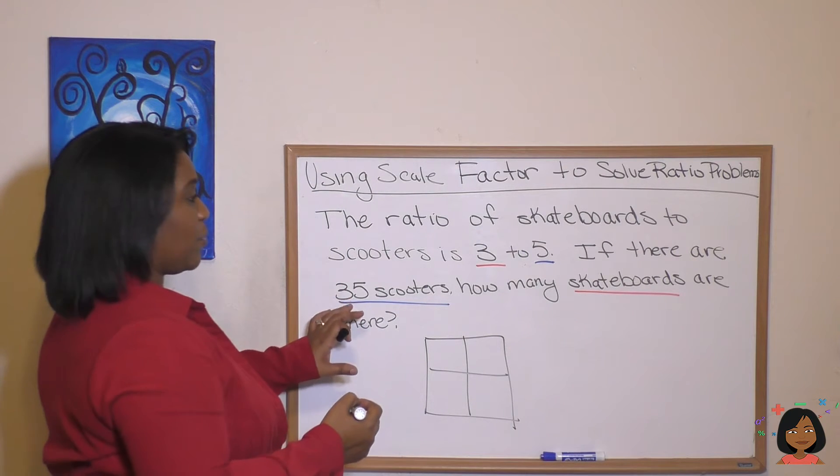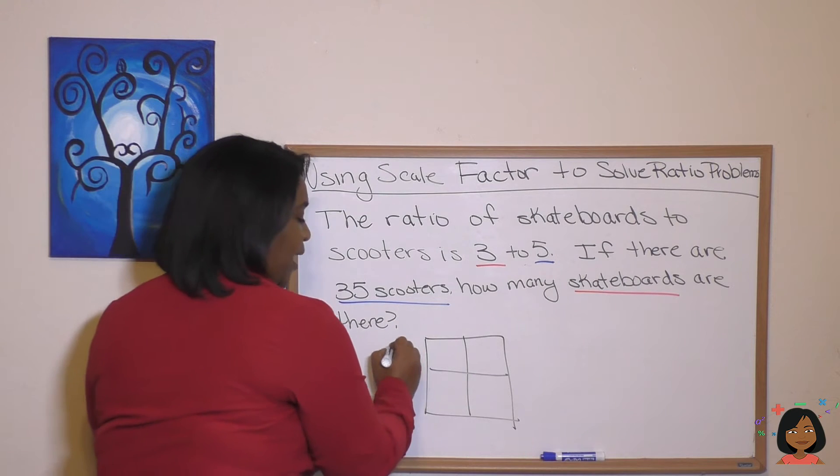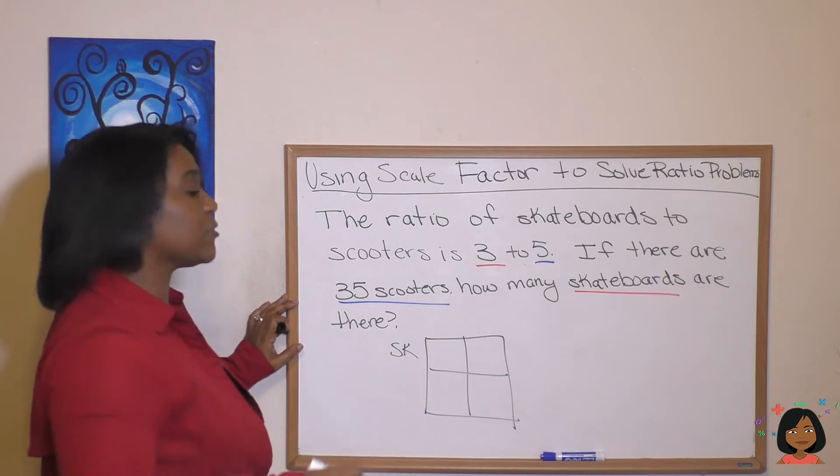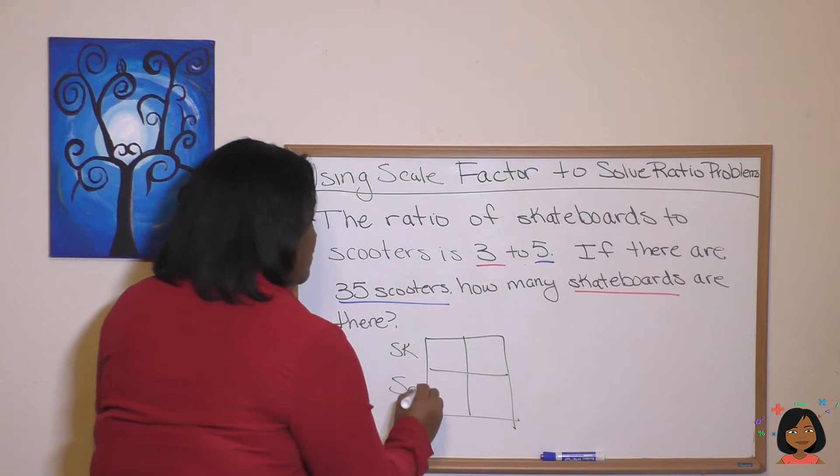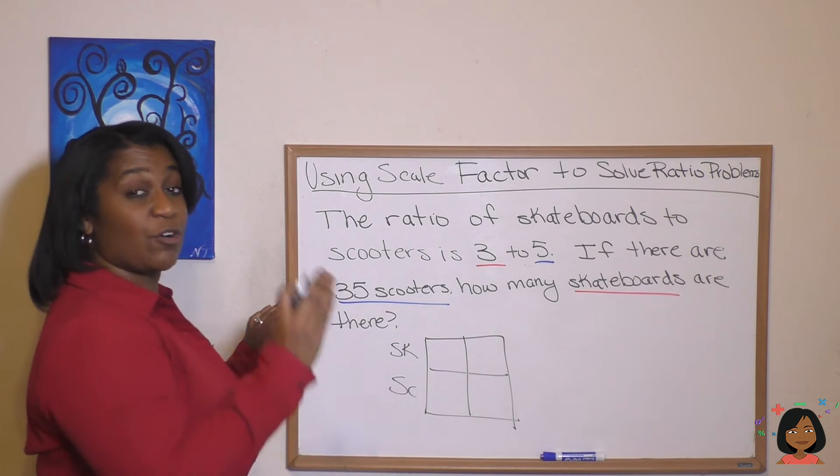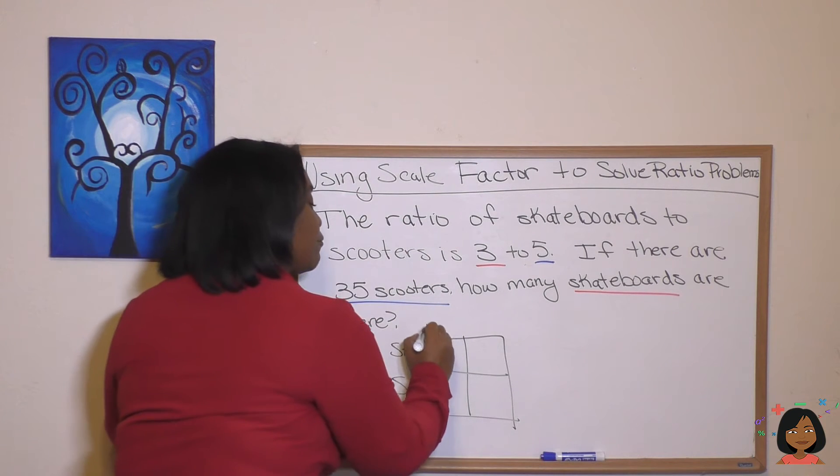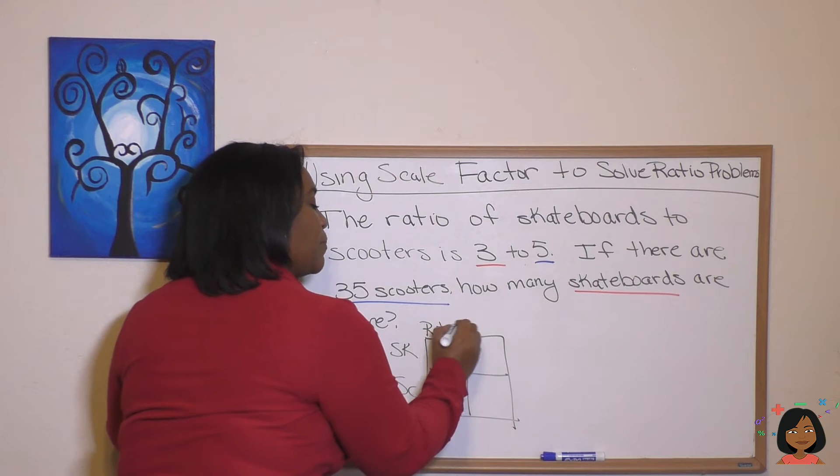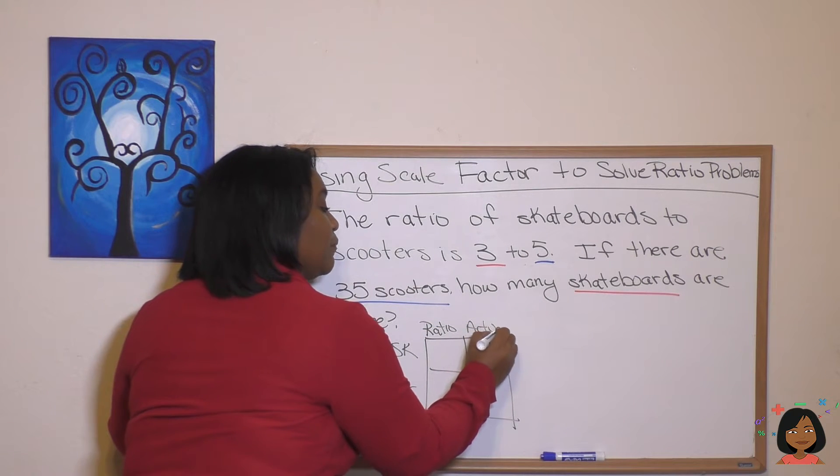And then I'm going to label them. We're going to put skateboarders on top. So I'm going to put SK because I don't feel like writing out skateboarders. I'm going to put SC for scooters. Across the top, I'm going to put ratio and then I'm going to put actual.